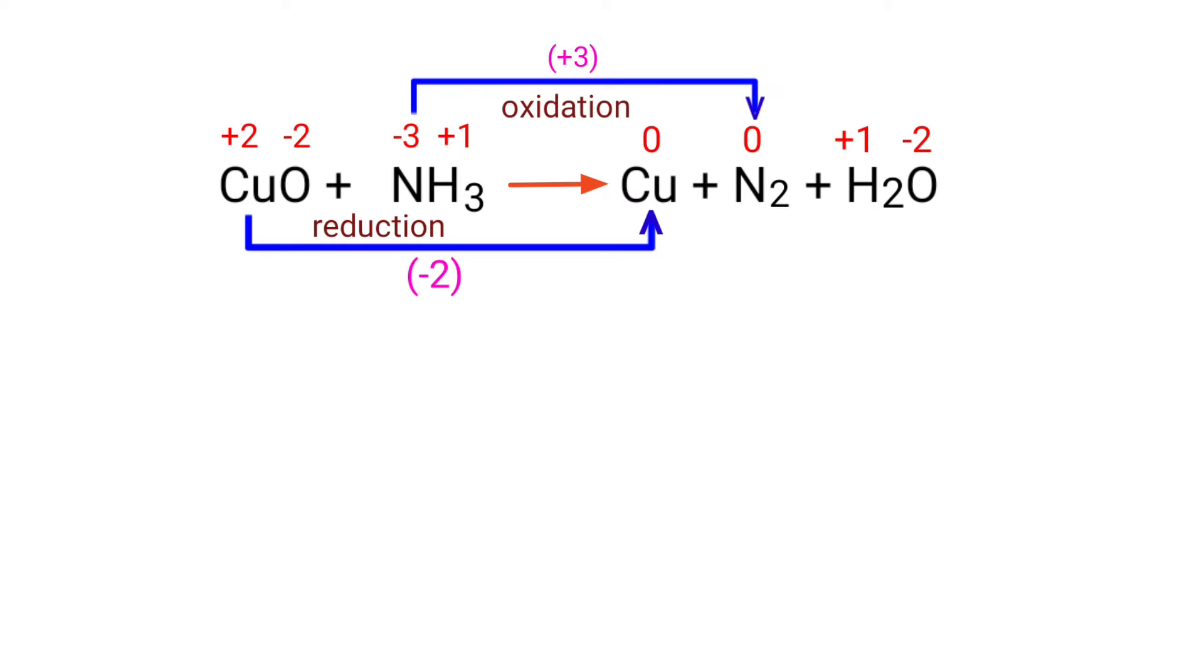Now you can make the increased oxidation number equivalent to the decreased oxidation number. To do this, you can multiply the increased oxidation number by a coefficient of 2 and multiply the decreased oxidation number by a coefficient of 3.